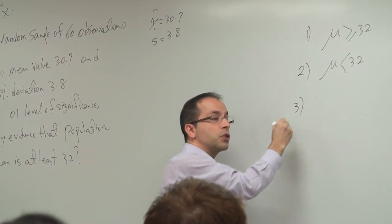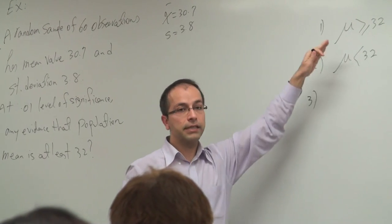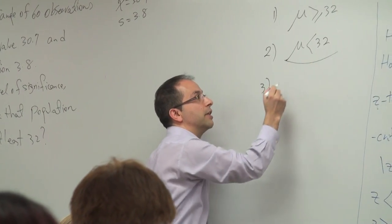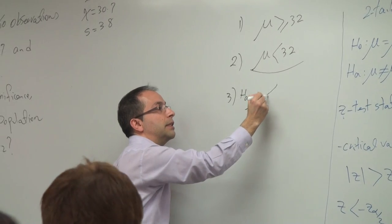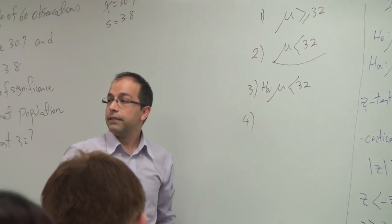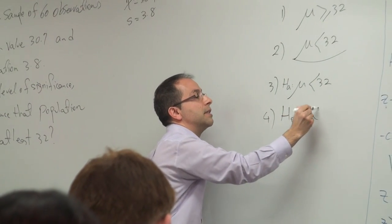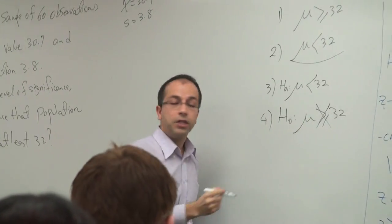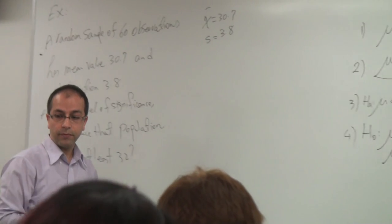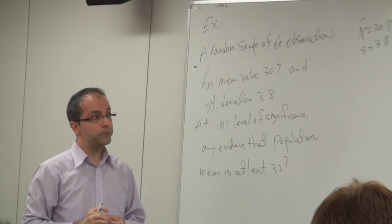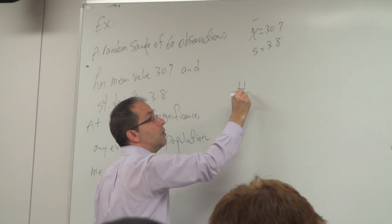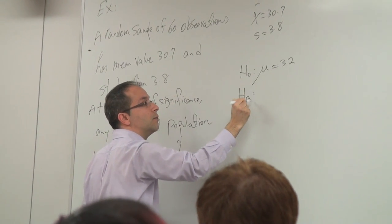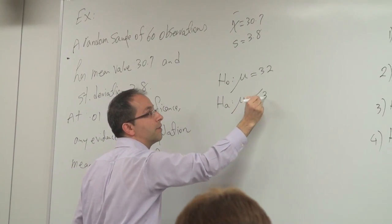Then we select Hₐ—which one is the alternative hypothesis? The one with inequality. So Hₐ will be μ < 32. The other one will be the null hypothesis μ ≥ 32, but we always write this in the form of μ = 32. So H₀: μ = 32, Hₐ: μ < 32.